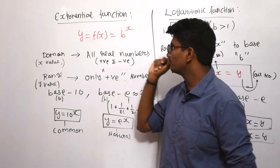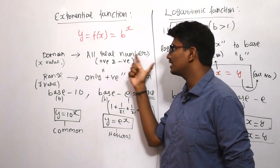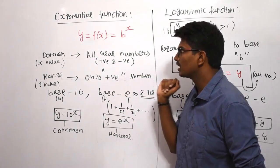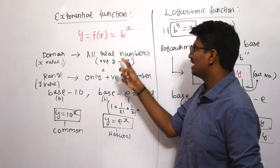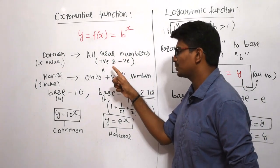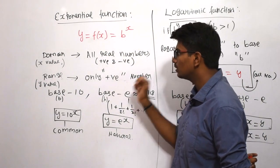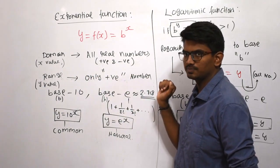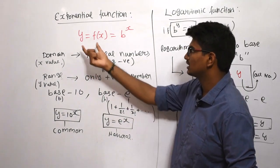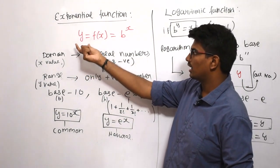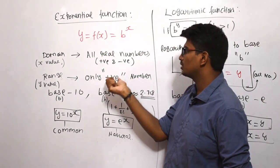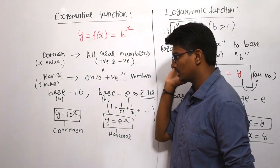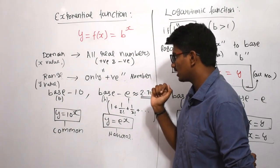What are all the values it could have? The x values could be all real numbers — it may be positive or negative. And the y value, even if you substitute a positive or negative x value, the y value will always be positive. If you substitute x, you will get always a positive number.